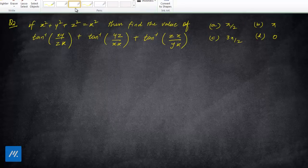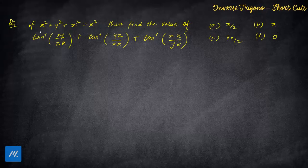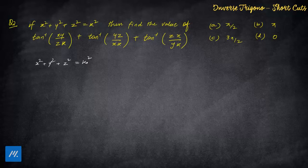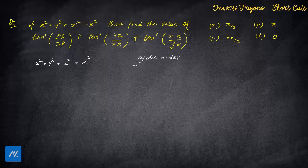The next problem: x² + y² + z² = k², and there is a summation of tan inverse terms following a cyclic pattern — xy/z, yz/x, zx/y — cyclic order is forming. Whenever you see a cyclic order in a question, it gives you a hint that a shortcut could be applied.